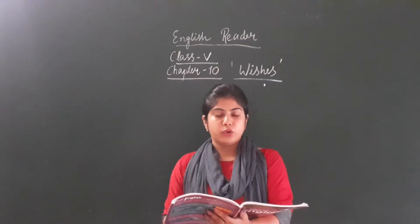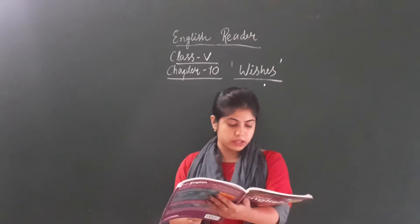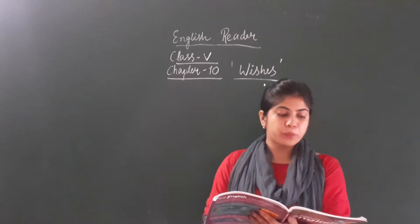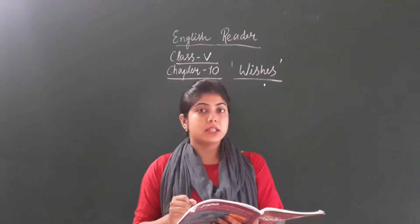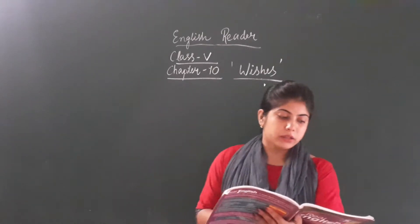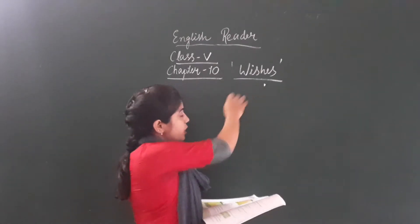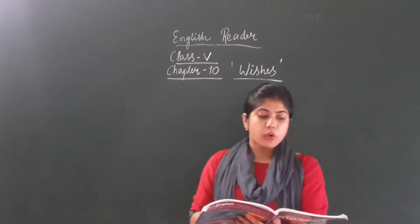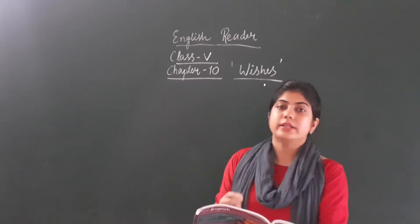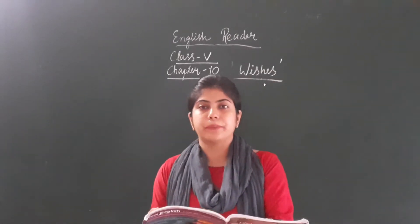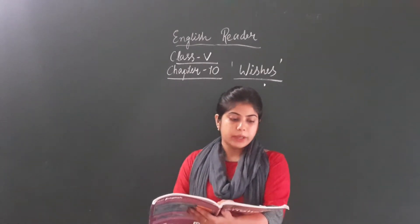Hello students, today I am going to teach the new chapter of the English reader that is written on page number 72. The chapter name is Wishes. This is a poem with the heading Wishes. Wishes will sound like desire — a desire for something. So here I am going to read the poem.